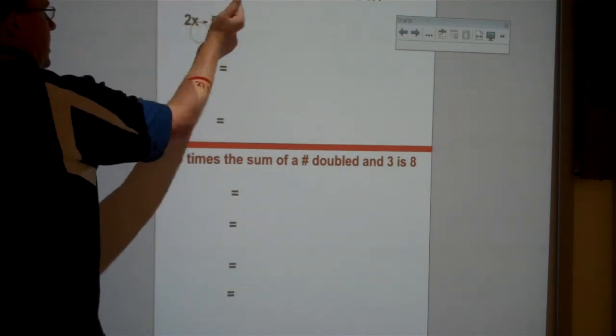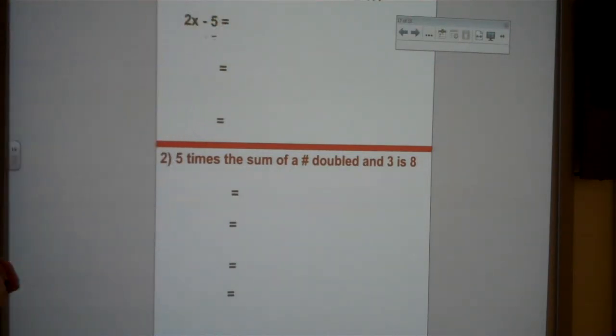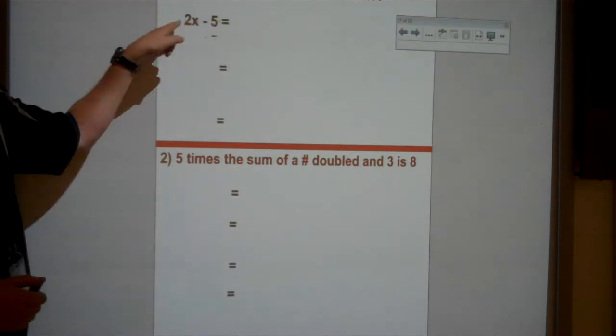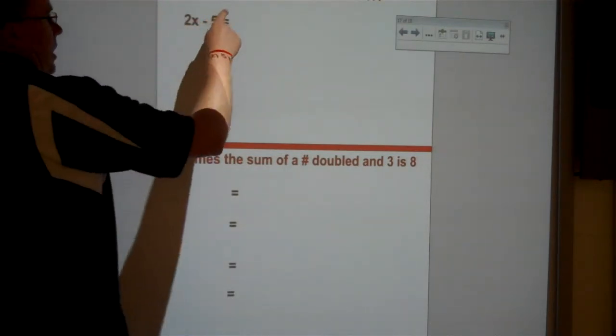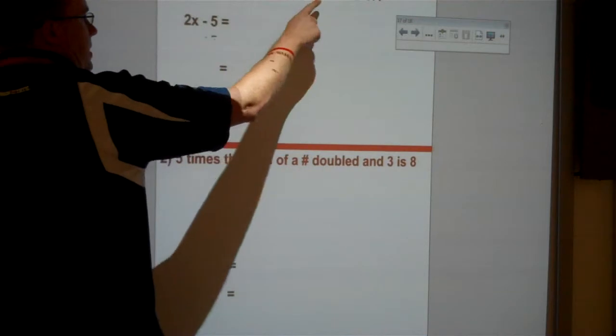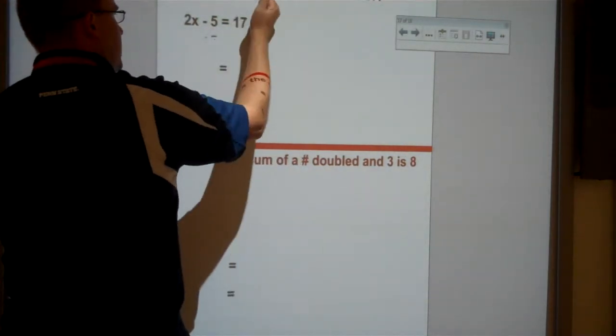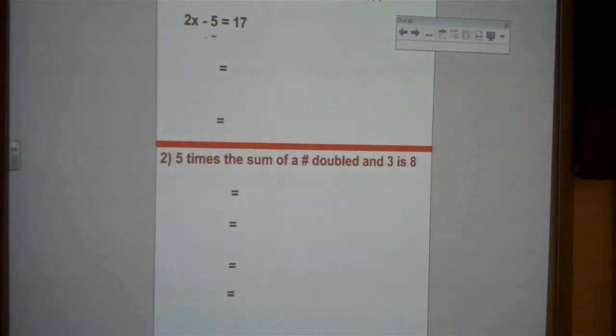So 5 less than twice a number. Remember that's one where you have to switch the equation around, so I've got 2x minus 5. Less than twice a number, 2 times x, is, which equals 17. And now we're just going to go ahead and solve this.